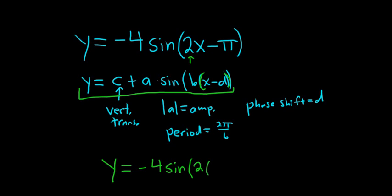So I'll pull out the 2. Then we have parentheses x. And then we're going to have to have something here. It looks like π over 2. And that should work, because if you multiply 2 times π over 2, the 2's cancel, right? And so you just get 2x minus π, which is what we have up here.